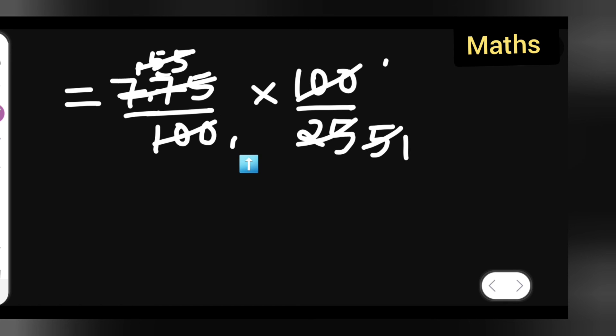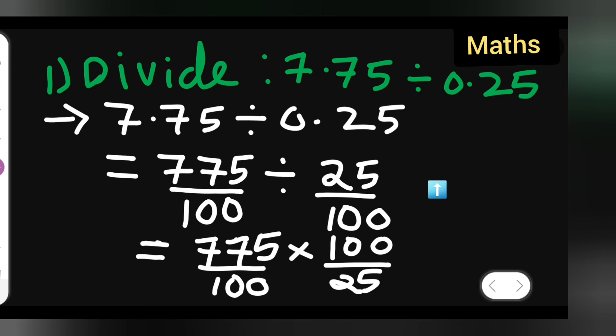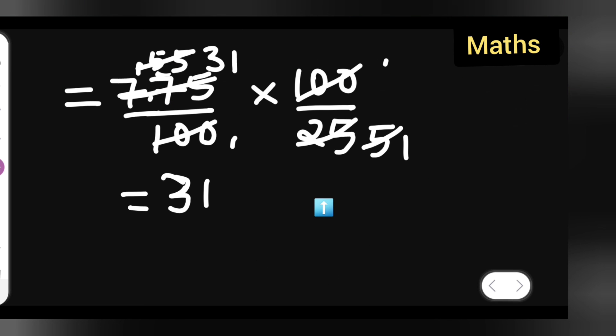5 threes are 15, 5 ones are 5, so your answer is 31. So you will have to know how to cancel the terms. I hope you have understood how to divide 7.75 divided by 0.25. Thanks for watching. You can take down this. If any queries or doubts, you can comment below.